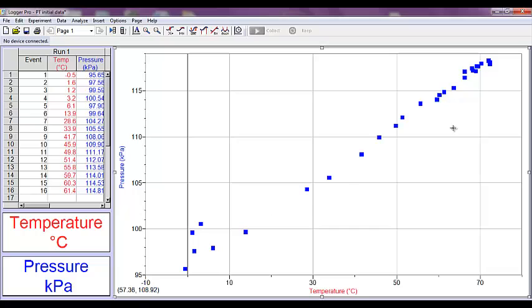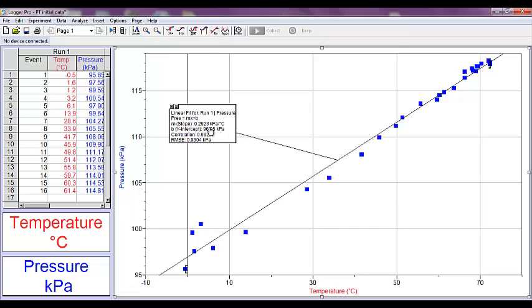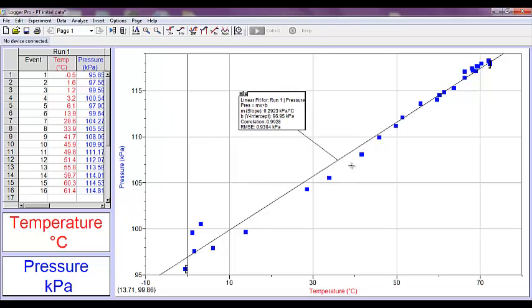Now, if we look at this data, we can see that it does have a pretty general linear fit. We have a couple iffy data points here. But if we do a linear fit, we get a pretty good best fit line. So go ahead and do your linear fit and print your graph.